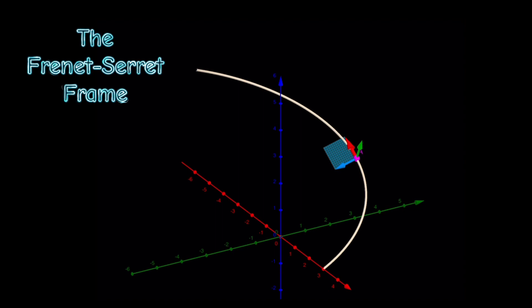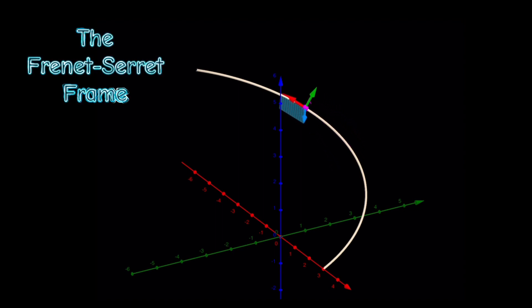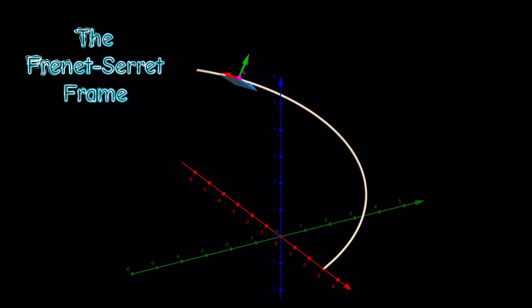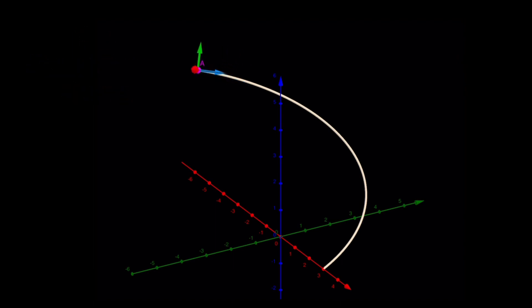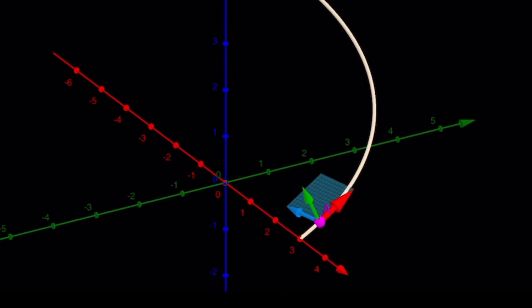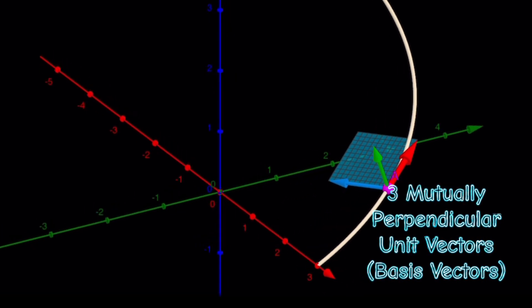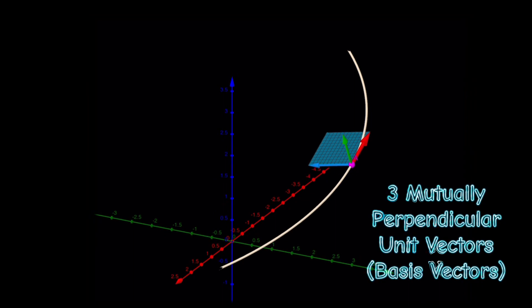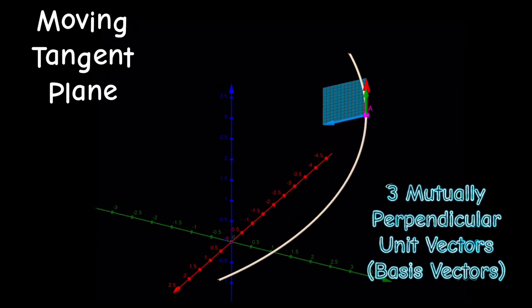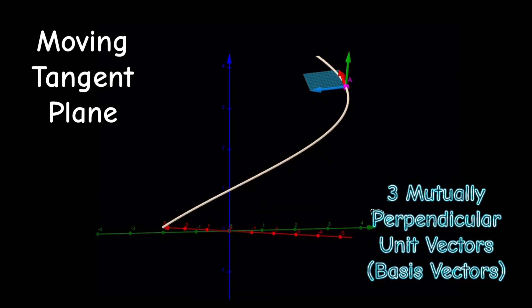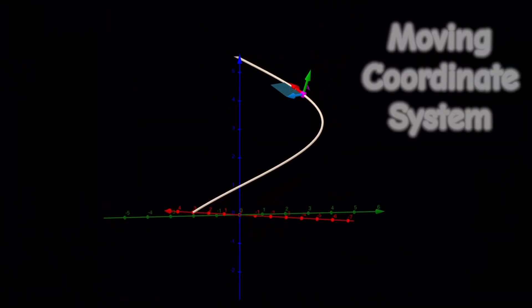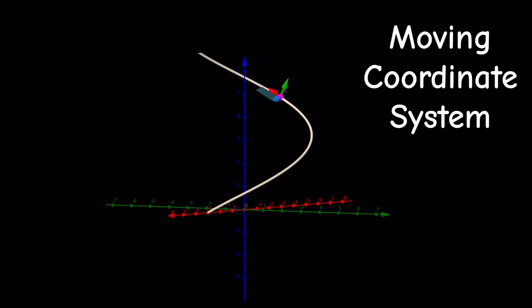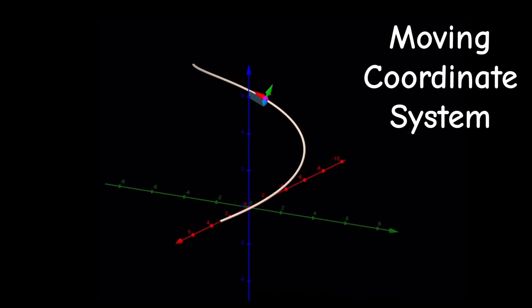This is also called the Frenet-Serret frame — three mutually perpendicular vectors created along the curve. You can see the tangent plane included here, like a boxcar riding along the curve. The Frenet-Serret frame is a moving frame: a set of unit vectors that allows us to describe the motion along the curve and serve as a basis for the three dimensions on the curve. So now we must ask: how do we construct such a frame?